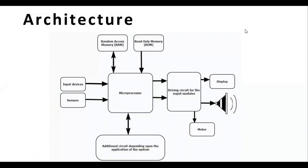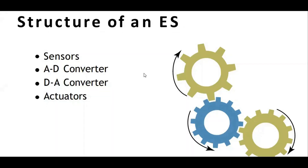The architecture of an embedded system is defined by a computer system with a processor, memory (RAM and ROM), and input/output peripheral devices, forming a large mechanical or electronic system for a dedicated function. Key components also include sensors, analog-to-digital converters (ADC), digital-to-analog converters (DAC), and actuators.